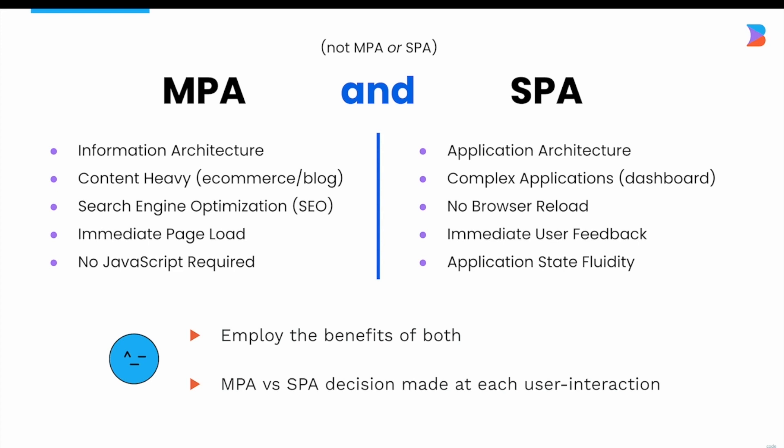This would be ideal for personalization where 100% of users could see the same product content but small sections are personalized to the user. Another realization with Quick is that the lines have blurred between a multiple-page app and a single-page app. MPAs are great for content-heavy sites like e-commerce with fast loading and good SEO, while SPAs are great for complex applications and immediate user feedback. But with Quick, the downsides of each approach are less of a problem, and rather than making an MPA vs SPA decision upfront, every single user interaction can decide if it should be MPA or SPA.